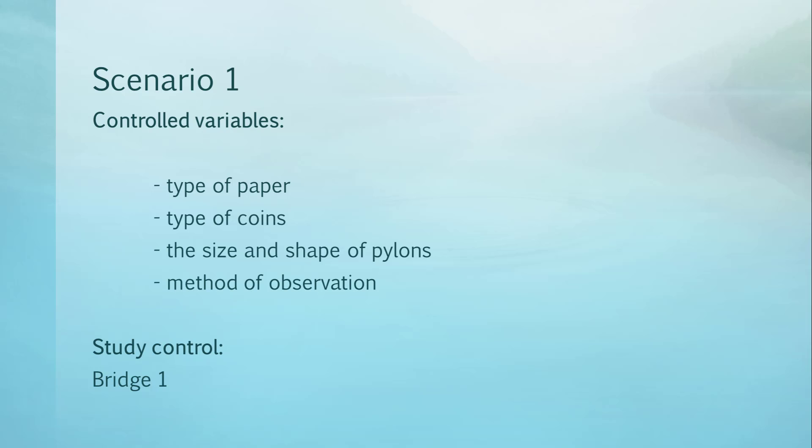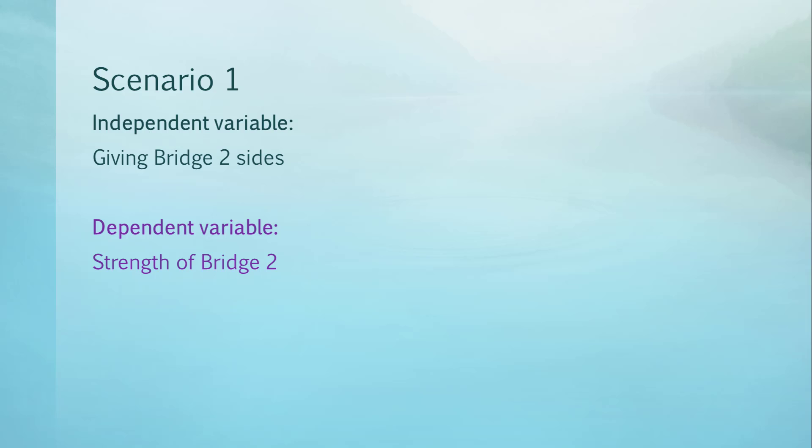The study control is bridge 1. The independent variable is giving bridge 2 sides and the dependent variable is the strength of bridge 2.